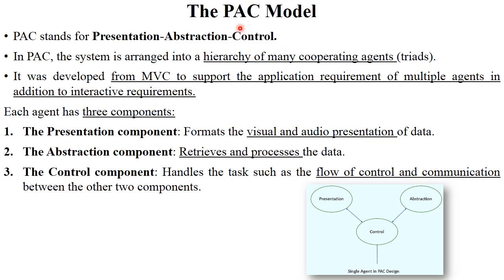The next model is the PAC model. PAC stands for Presentation, Abstraction, and Control. The PAC model arranges all things in a hierarchical format of many cooperative agents. It was developed from MVC — the Model View Controller architecture — and supports the application requirement of multiple agents in addition to interactive requirements. The Presentation component formats the visual and audio presentation of data. The Abstraction component retrieves and processes data using SQL queries. The Control component handles the flow of control and communication between the other two components.